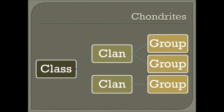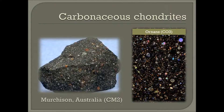Chondrites are broadly divided into three major classes: carbonaceous, ordinary, and enstatite. The carbonaceous class is divided into four clans consisting of eight groups, which are represented by a two-letter abbreviation. The first letter, C, denotes the meteorite is a member of the carbonaceous class. The second letter is usually the first initial of the representative specimen for that group.